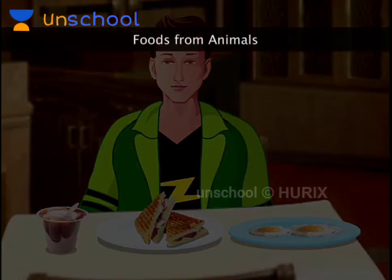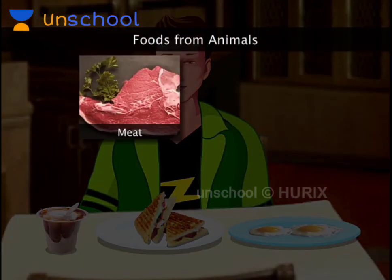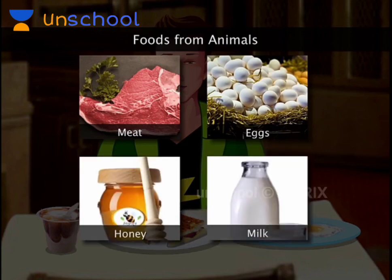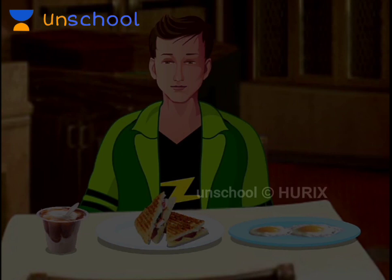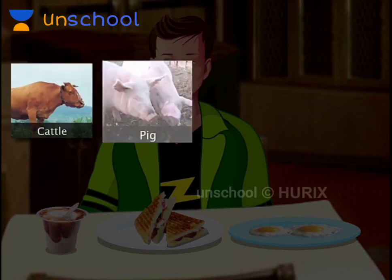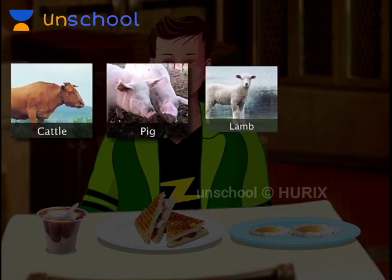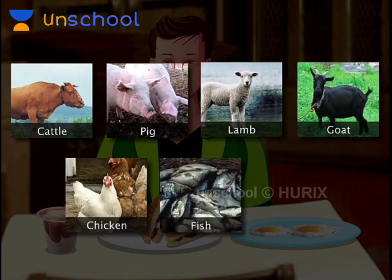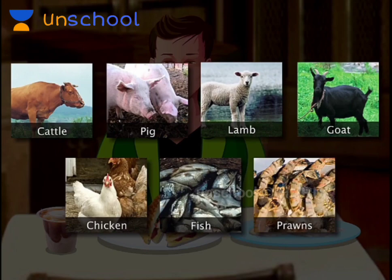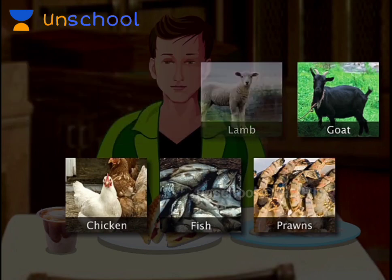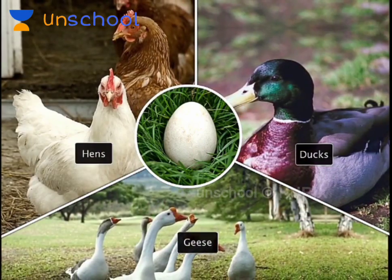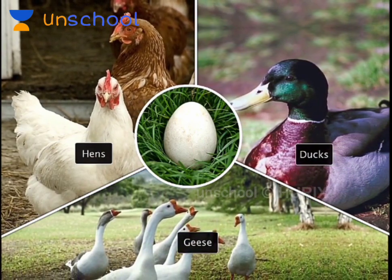Food from animals includes meat, eggs, honey and milk. Humans eat the meat of animals such as cattle, pigs, lambs, goats, chicken, fish, prawns, etc. Eggs are obtained from hens, ducks and geese.